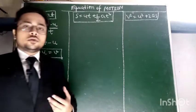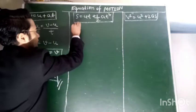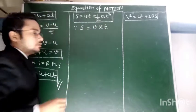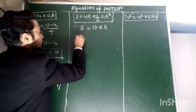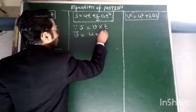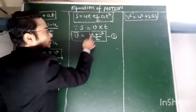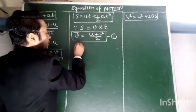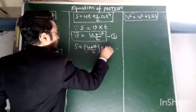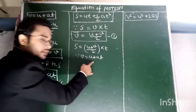We will prove here our second equation, which is S equals UT plus half AT square. Since we know that distance or displacement equals velocity into time, and average velocity equals U plus V upon 2, we will put this value in the equation: S equals U plus V by 2 into T. Since we know V equals U plus AT, we will put this equation here.